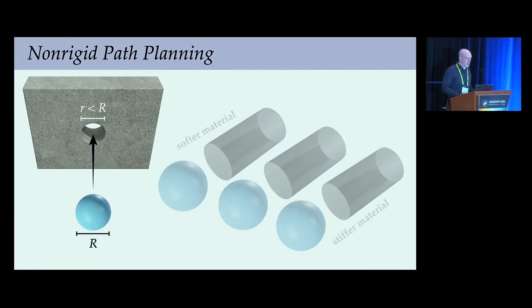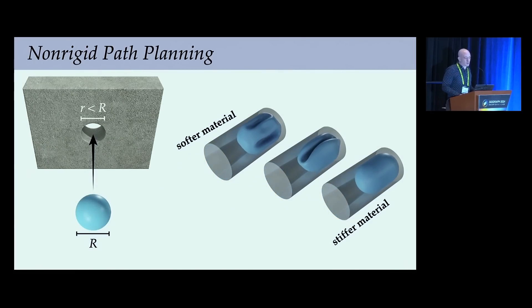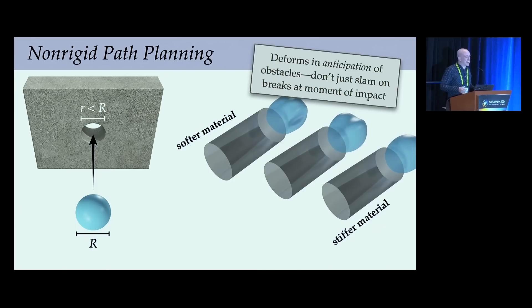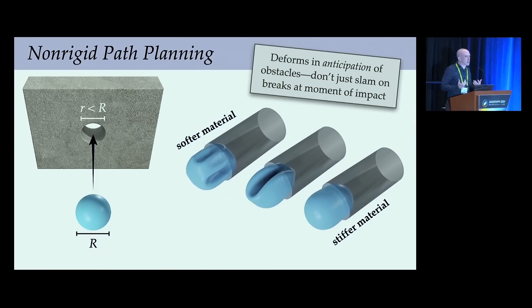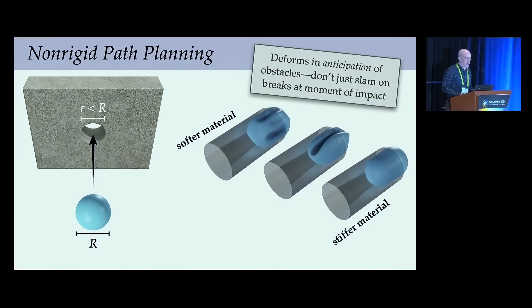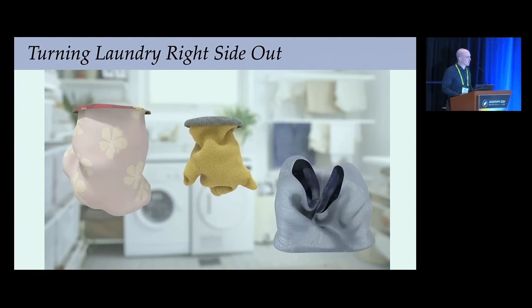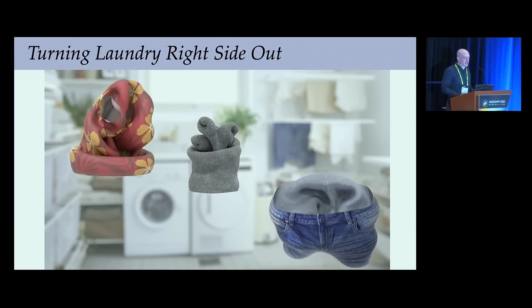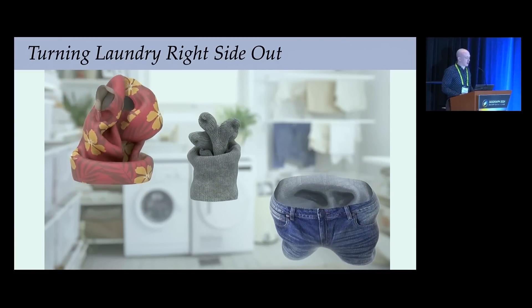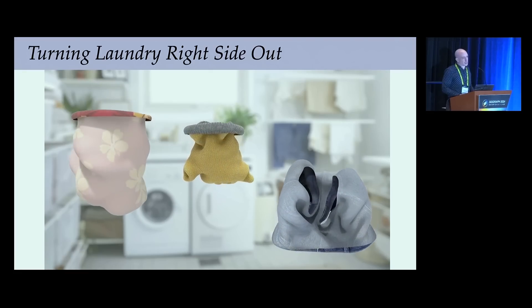We can also do non-rigid path planning by performing interpolation in the presence of static repulsive obstacles—for instance, sending a large ball through a small hole. What's really interesting here is the shape actually deforms in anticipation of obstacles; this isn't dynamical simulation where we just slam on the brakes at the moment of impact. We also see the effect of varying membrane stiffness. Repulsive interpolation can also help with turning laundry right side out—reversing all the dihedral angles of a mesh—yielding natural-looking wrinkles while avoiding self-contact.